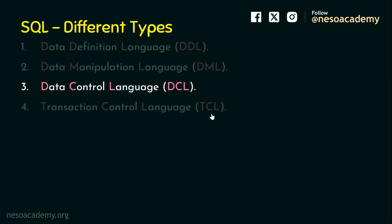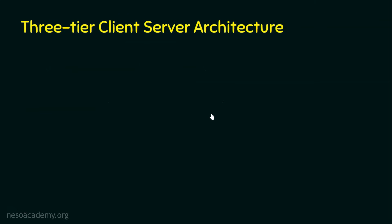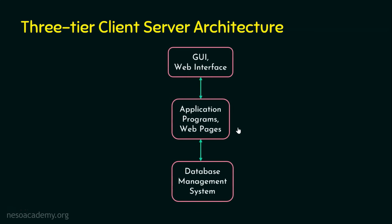Before stepping into the data control language, I would like to give you a quick recap about the three-tier client-server architecture. This three-tier architecture is the predominant software architecture for traditional client-server applications — a well-structured software application architecture that organizes applications into three logical and physical computing tiers. The first tier the user interacts with is the presentation level, then comes the business logic tier, then comes the database logic tier.